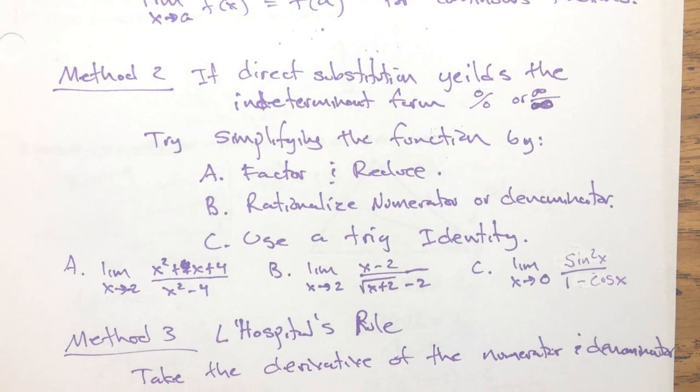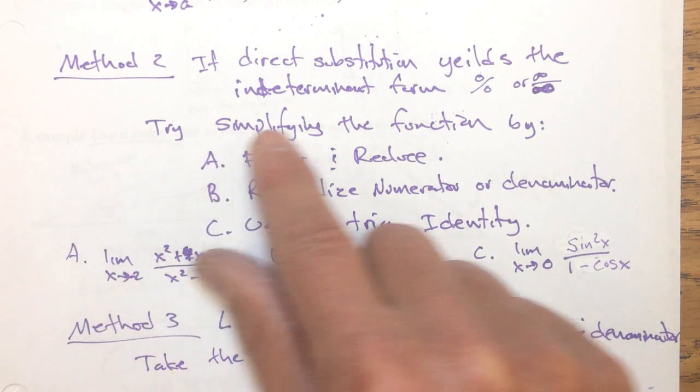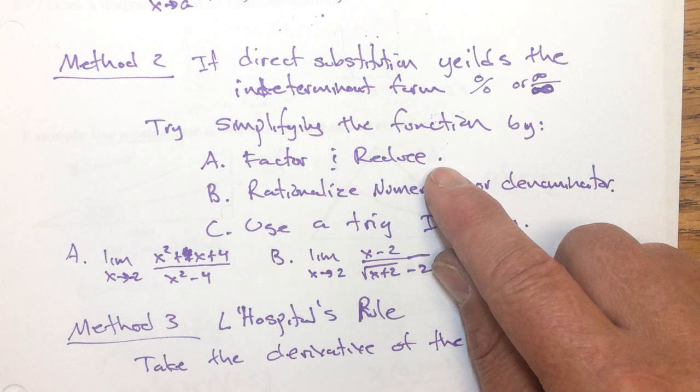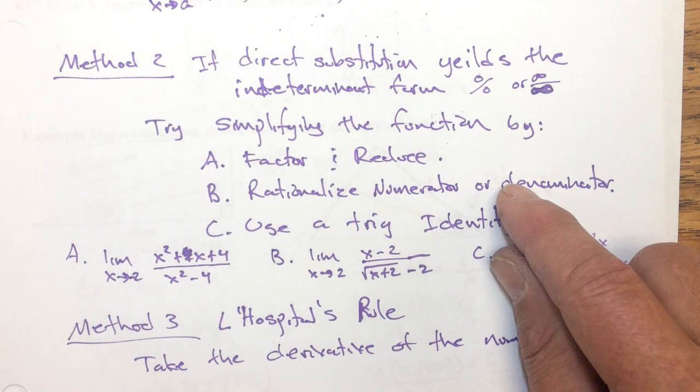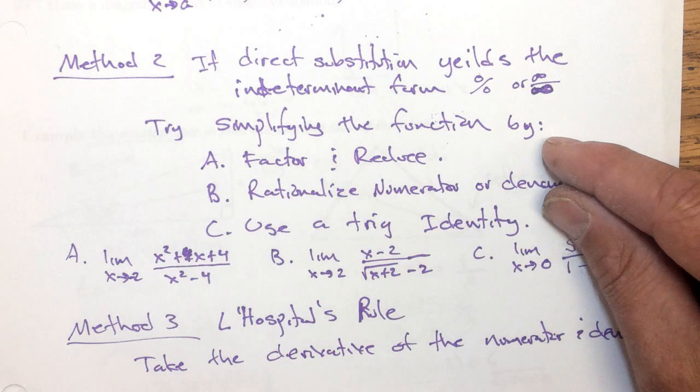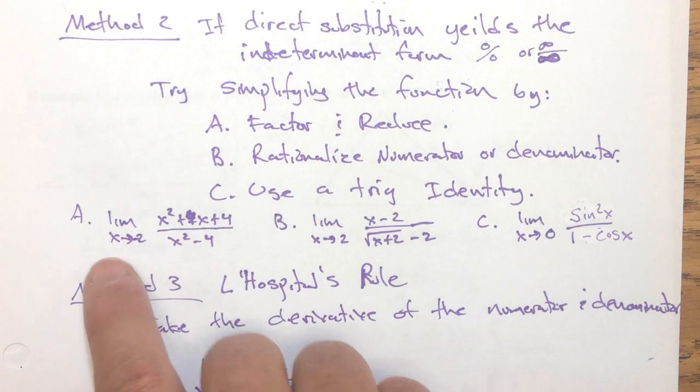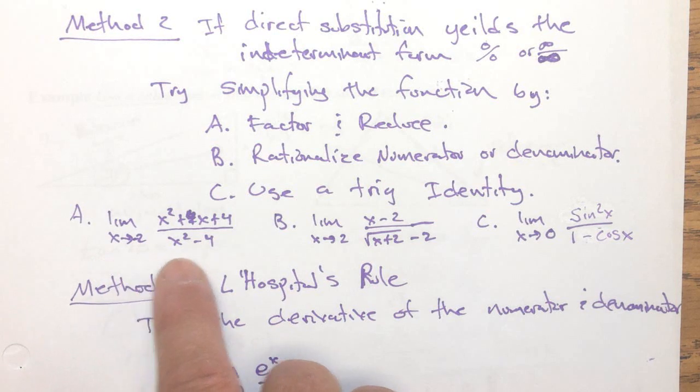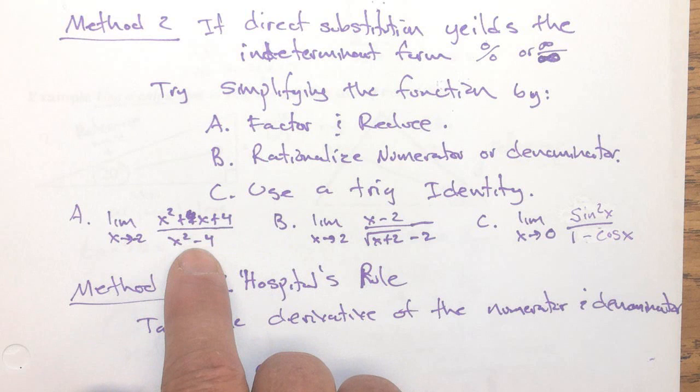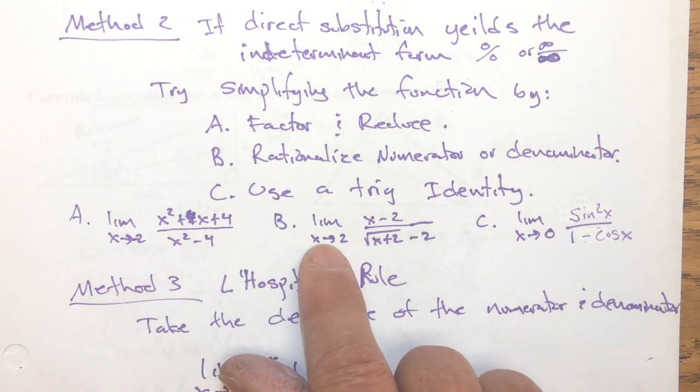Here's the methods that you would use. For method two, basically, you try simplifying the fraction. You either factor and reduce, rationalize the numerator and denominator, or use a trig identity. These are three things I listed here for simplifying this type of a limit. So, I have three examples here. That's the limit as x versus negative two of this thing. And you get the indeterminate form, and you factor and reduce.